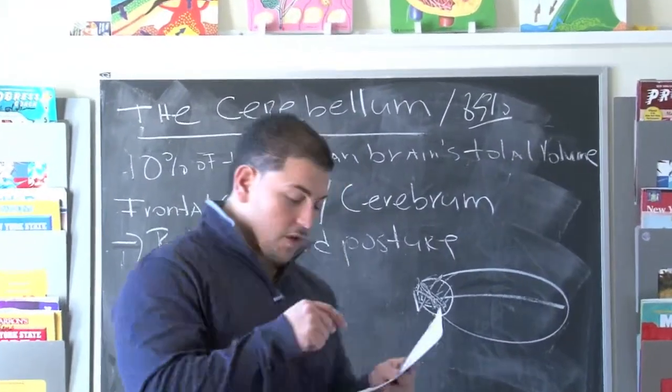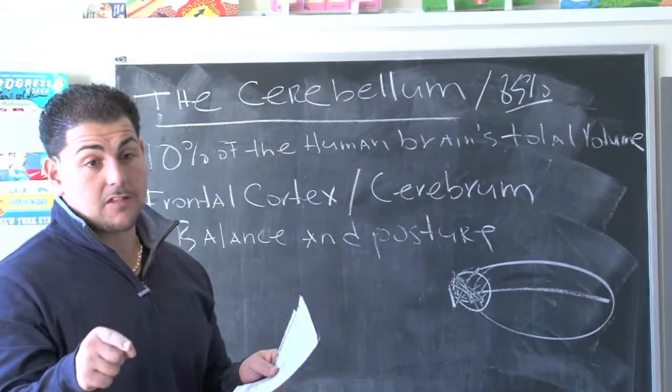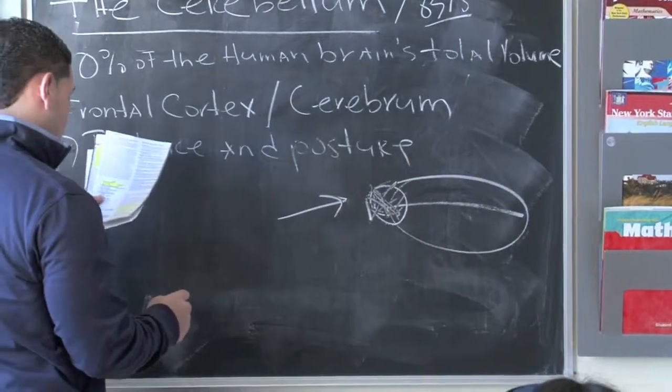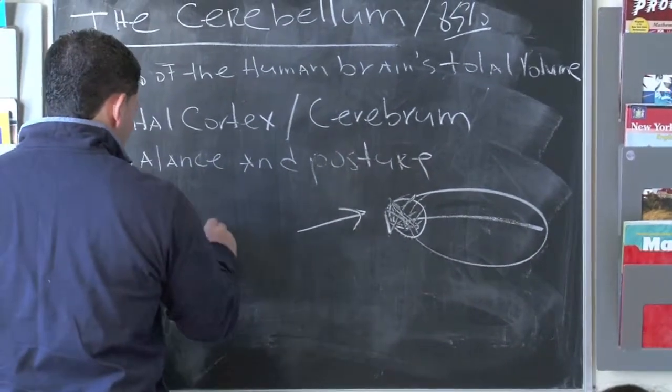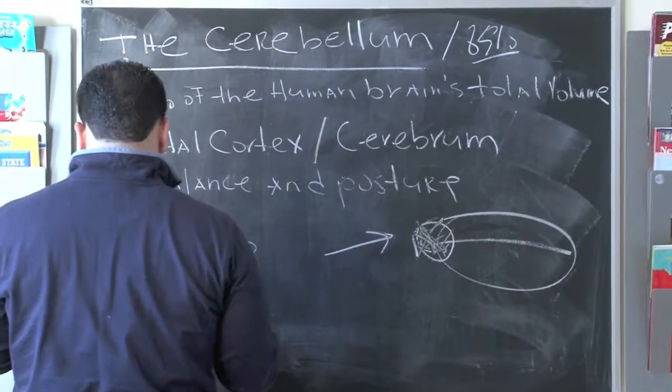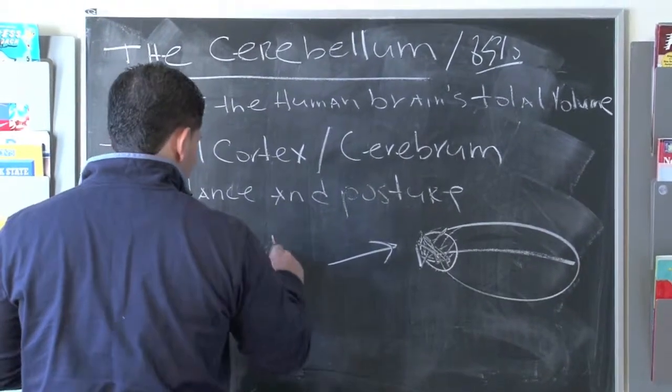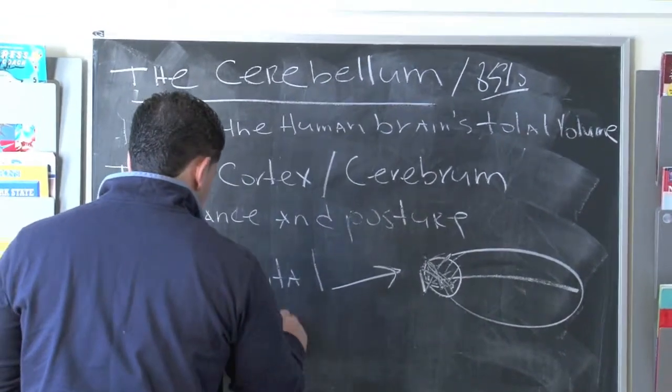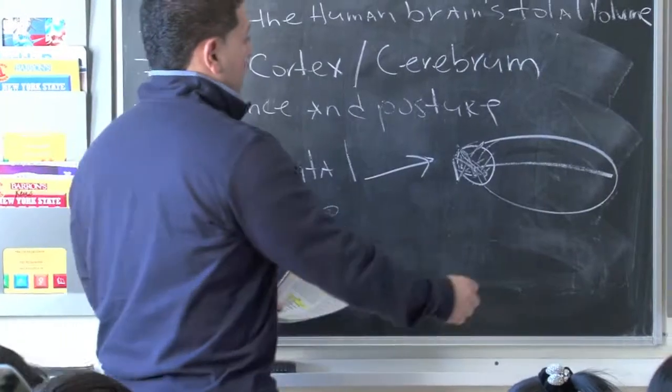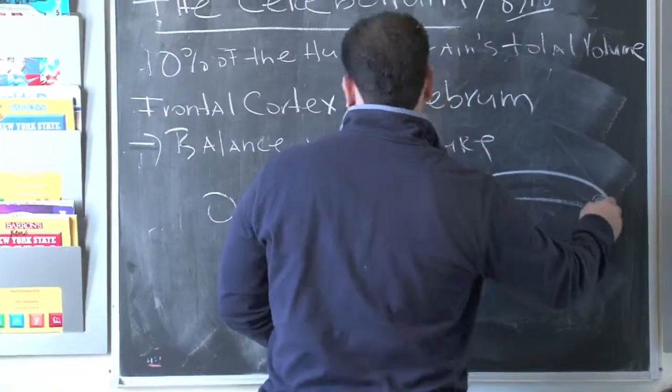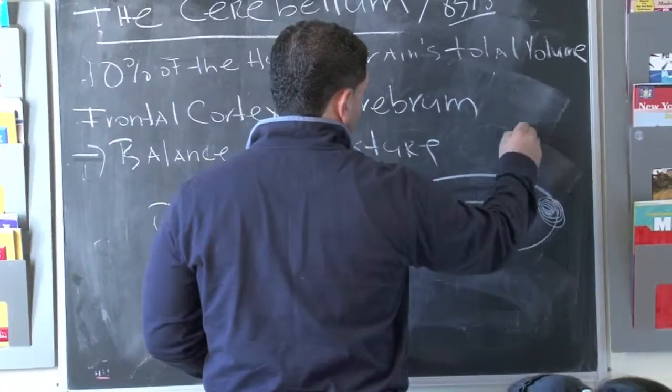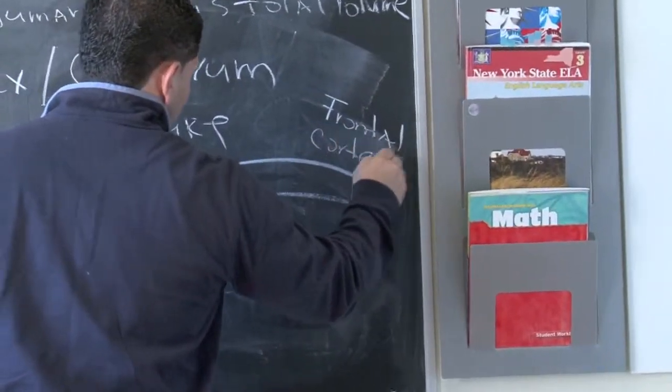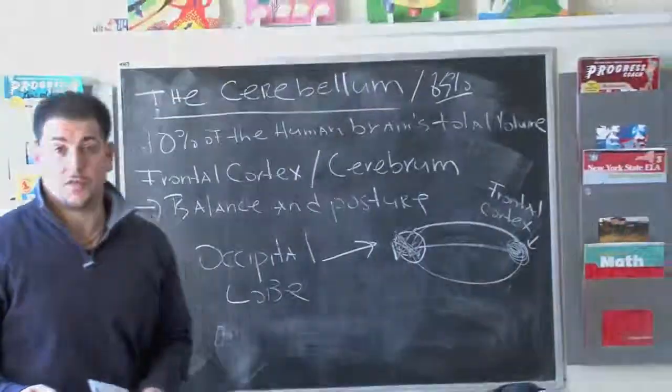Now, going forward, the main thing I want you to write, and this is the science term that will be on the test, the back of your brain, this part of your brain, is called the occipital lobe. Write that down. O-C-C-I-P-I-T-A-L L-O-B-E. That's important. And the front of your brain, like I said earlier, this part is the front. That's called the frontal cortex.